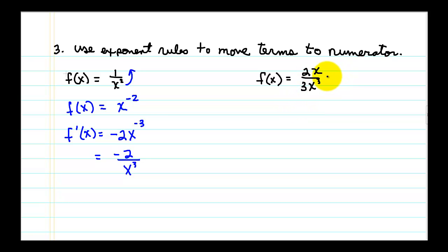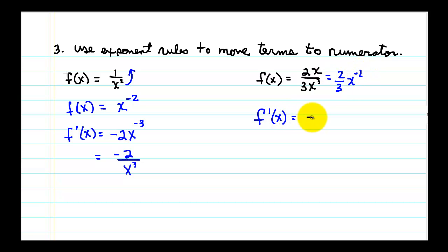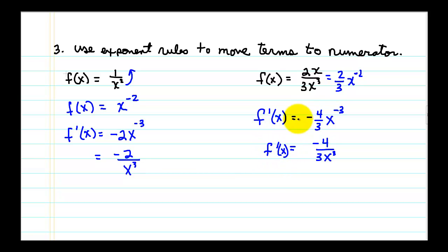Most of the time we write final answers without negative exponents, so we move x to the negative 3 to the denominator and change its sign. For a second example, we simplify the fraction and combine the x's to get 2 thirds times x to the negative 2. The constant is a fraction: negative 2 times 2 thirds is negative 4 thirds, then subtract 1 from the exponent. We can rewrite moving x to the denominator for the final answer. Remember: when rewriting we are still working with f of x, but once you apply a derivative rule, the function is called f prime of x.